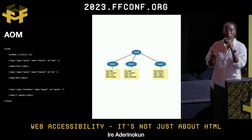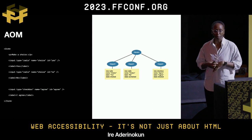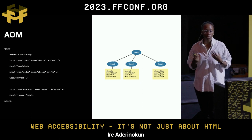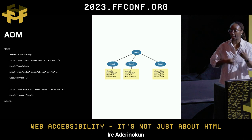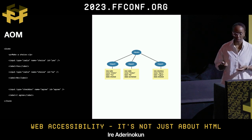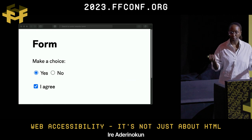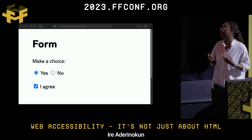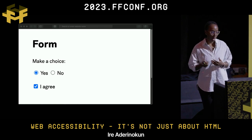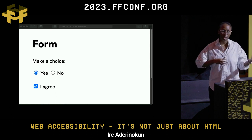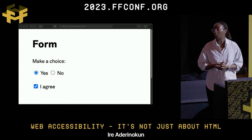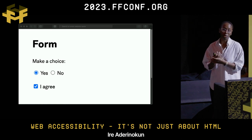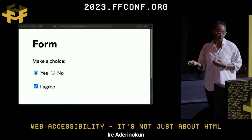The Accessibility Object Model looks at each interactive element on the page and has information like the name of the element, its role, and its current state — all crucial for anyone navigating with assistive technologies. For someone navigating visually, filling out a form is easy — you can see the choices, see yes and no, see which is selected and the label. But if you can't look at it, the only way to get all that information is from the Accessibility Object Model.